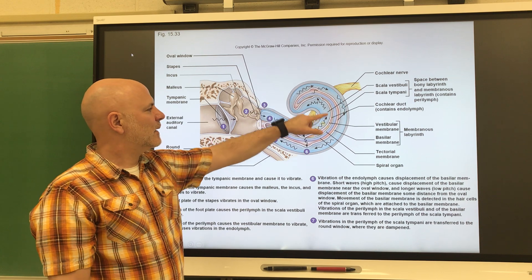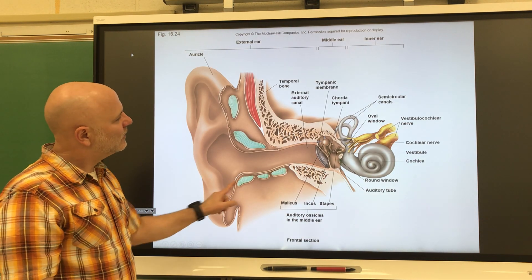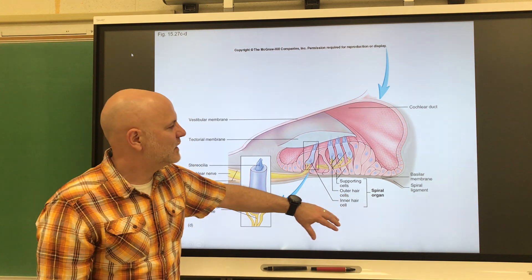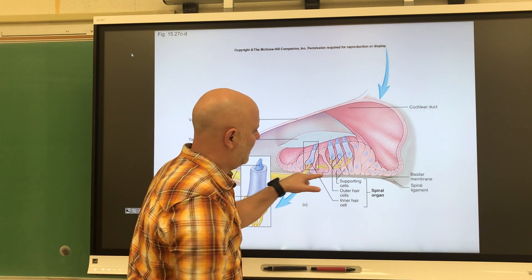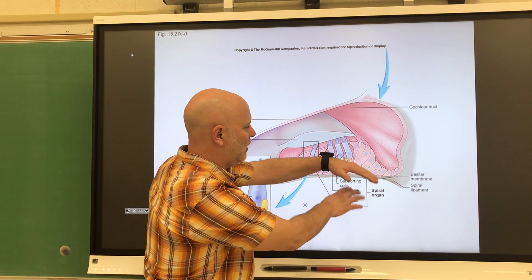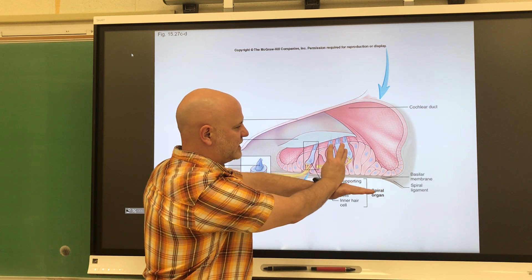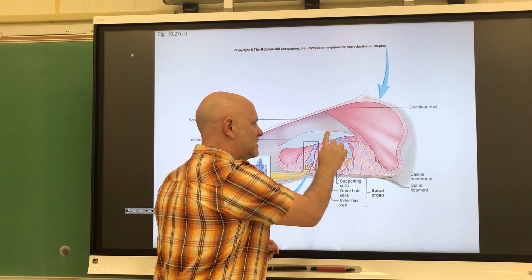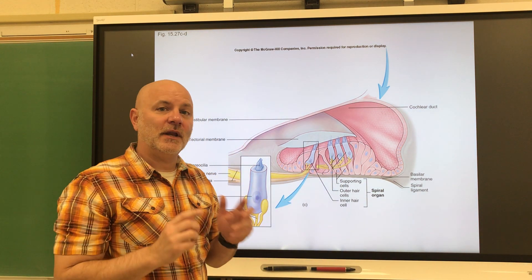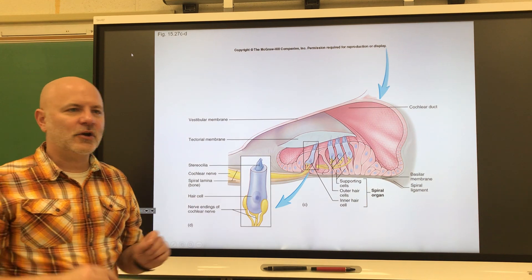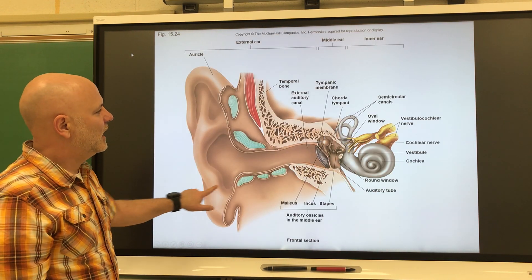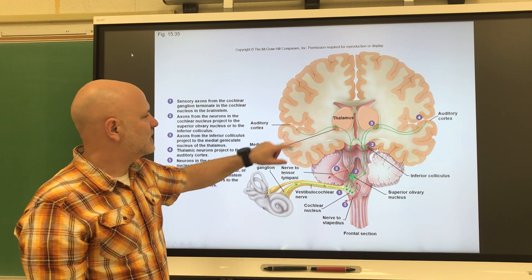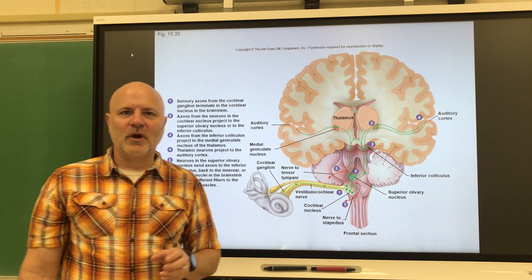Moving the fluid in the scala tympani moves the basilar membrane up and down. The hair cells are attached to that basilar membrane, so when they get moved, they come up and touch the tectorial membrane. Touching the tectorial membrane starts a signal or impulse along the cochlear nerve — the cochlear portion of the vestibulocochlear nerve — and then that impulse moves to the auditory cortex in the temporal lobe, where we interpret the sound.